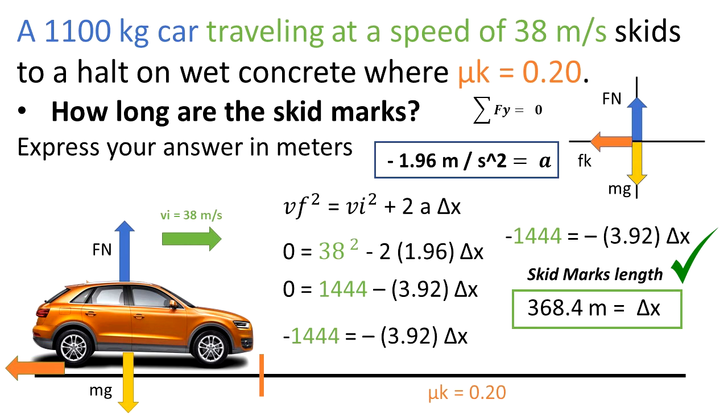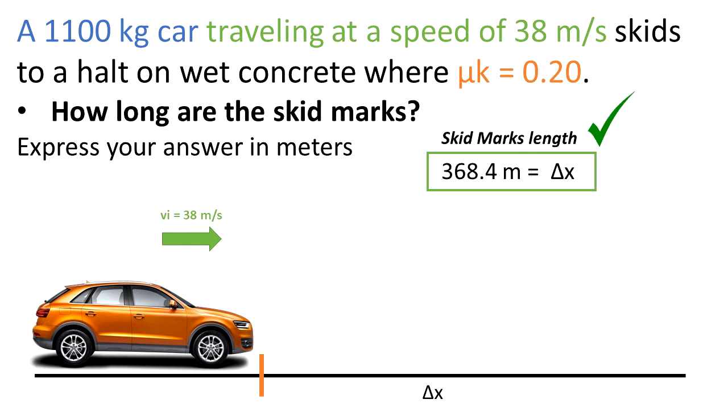That means that the car slides for 368.4 meters from the moment that the driver slams on the brakes to the moment when the car completely stops. We can see that the car has an initial velocity of 38 meters per second. In this precise moment, the driver slams the brakes.